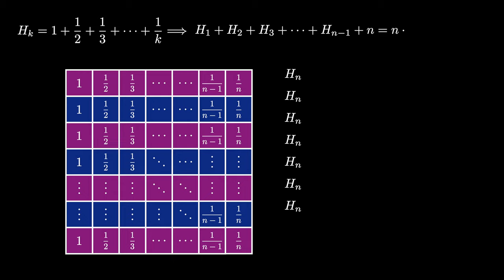But now we have an interesting identity. We see that if we sum up the harmonic sums where k ranges from 1 to n minus 1, we have n times h sub n minus n. This is a formula for the sum of harmonic sums.